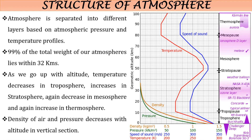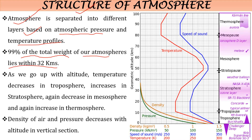So what is the structure of atmosphere? The atmosphere is separated into different kinds of layers based on atmospheric pressure and temperature profile. 99% of the total weight of the atmosphere lies within 32 kilometers. This layer is full of air mass and has a high density of air.